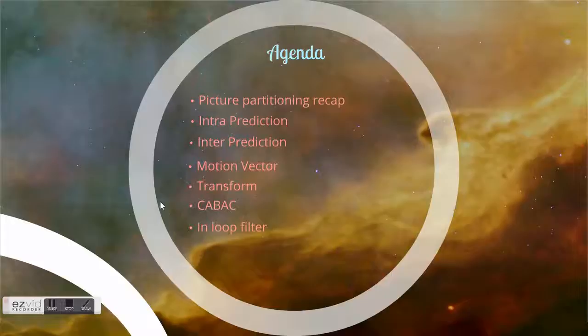I will make a small recap from part 1 where I talked about picture partitioning, prediction unit, transform unit and CU unit. Today I will touch a bit on this. I will touch on basic standard of inter-prediction modes, motion vector, compensation, transform, CABAC and in-loop filter.